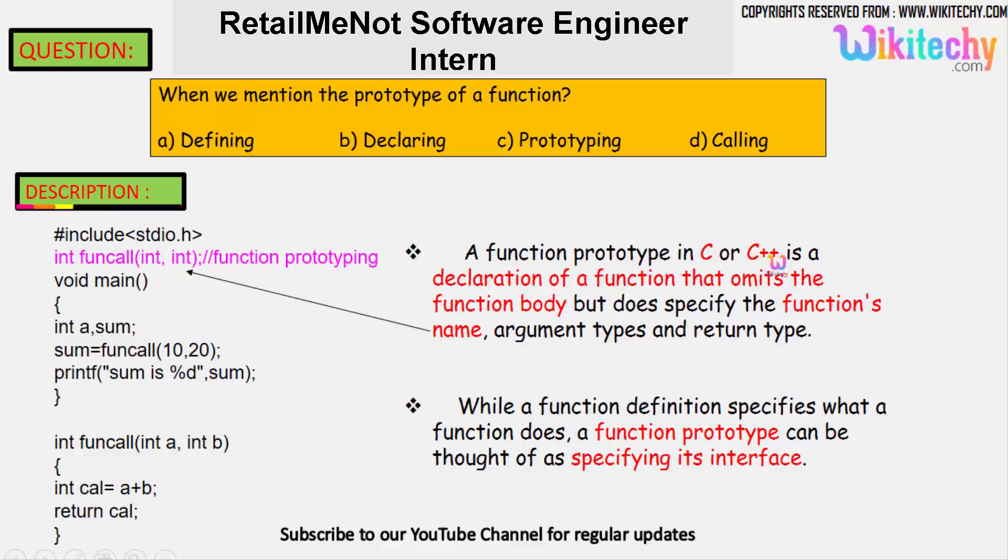A function prototype in C or C++ is a declaration of a function that omits the function body but specifies the arguments and its return types. You have two arguments of type integer and the function is returning an integer. While the function definition specifies what a function does, a function prototype can be thought of as specifying its interface.